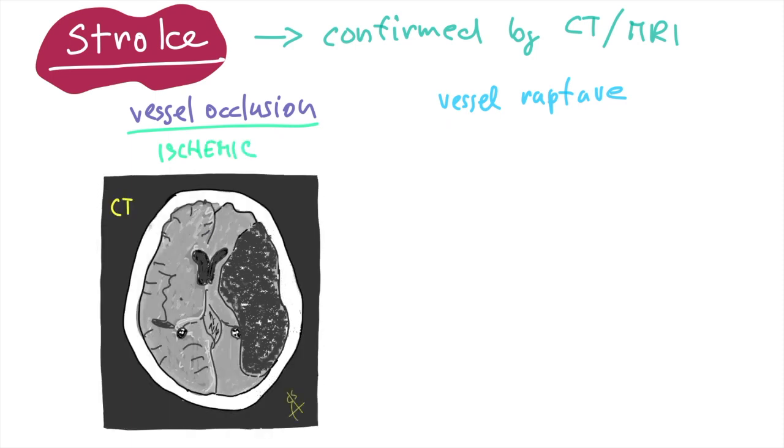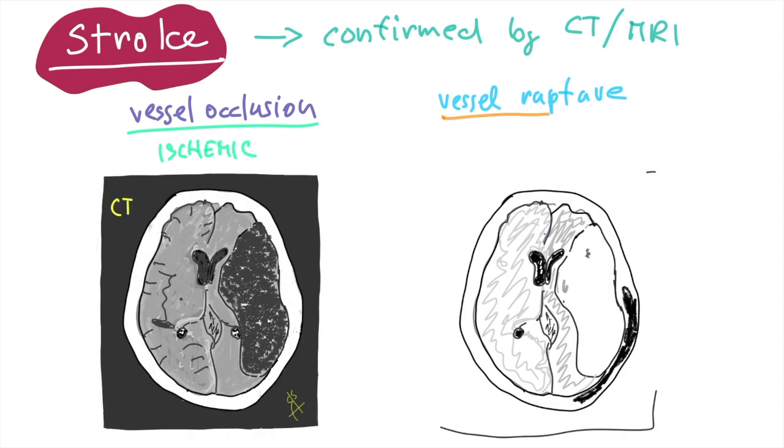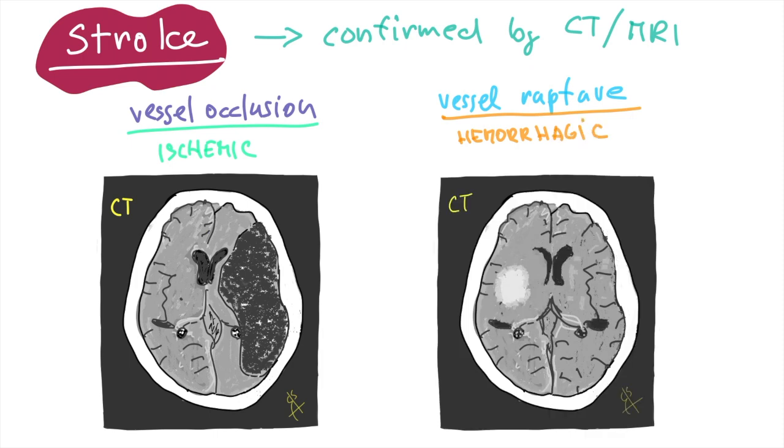In case of vessel rupture we call this hemorrhagic stroke, and only remember that transitory ischemic attacks are in relation with the ischemic strokes.